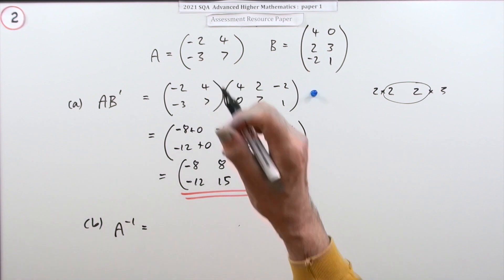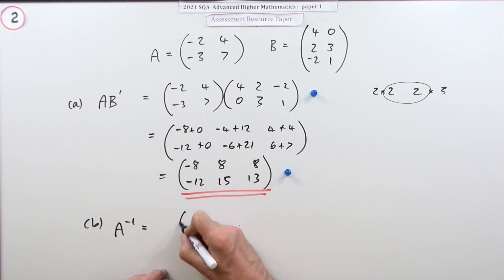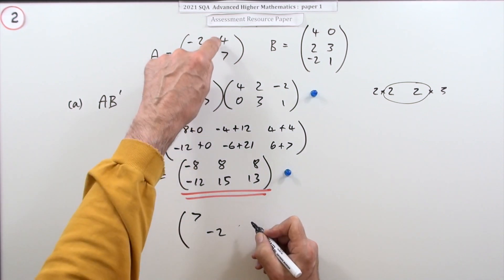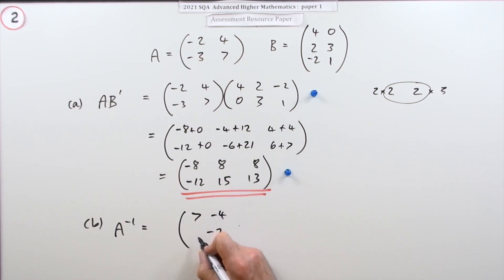So it just ends up as—and this is all you learn, you just learn the pattern. What do you do? Well, you flip that diagonal, you keep that the same but change their signs, and then you multiply it by one over the determinant.